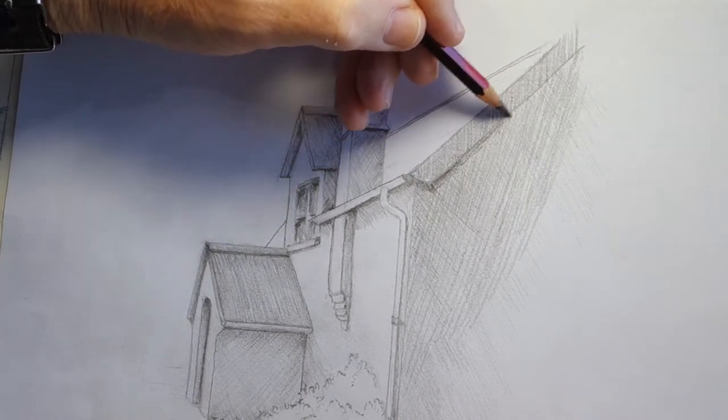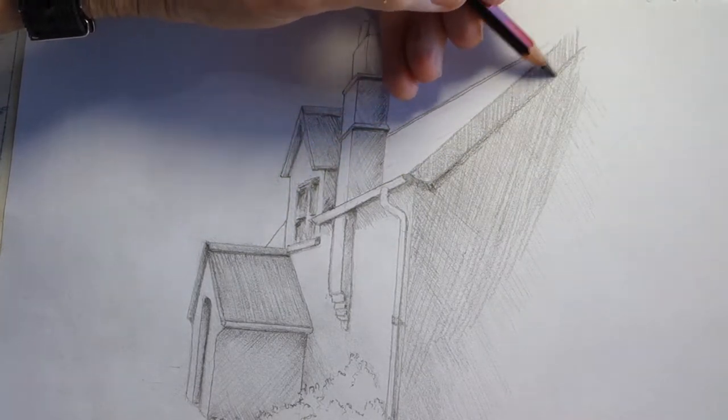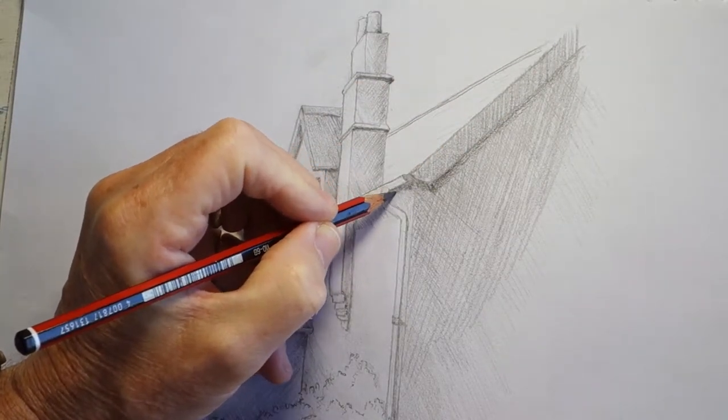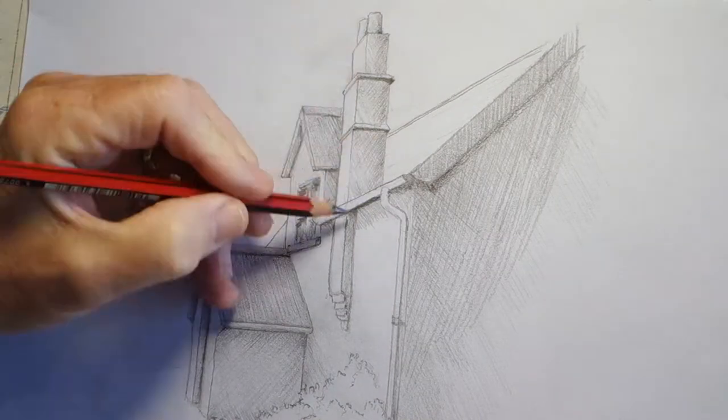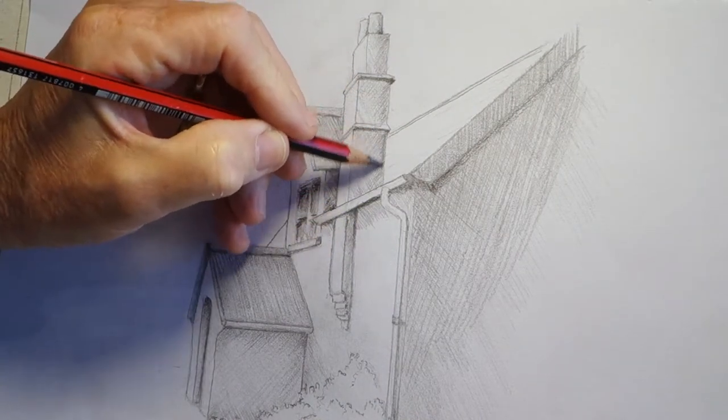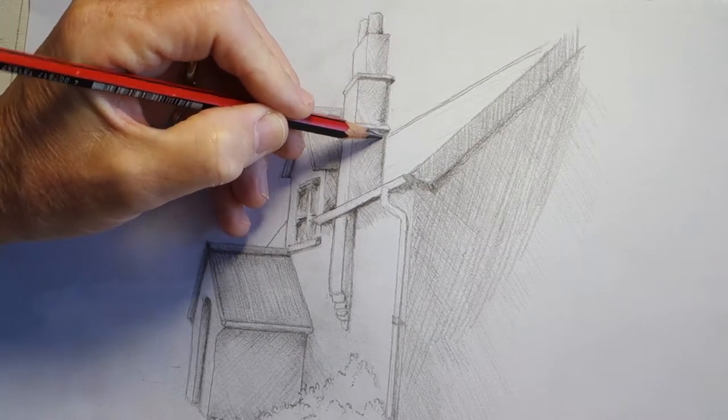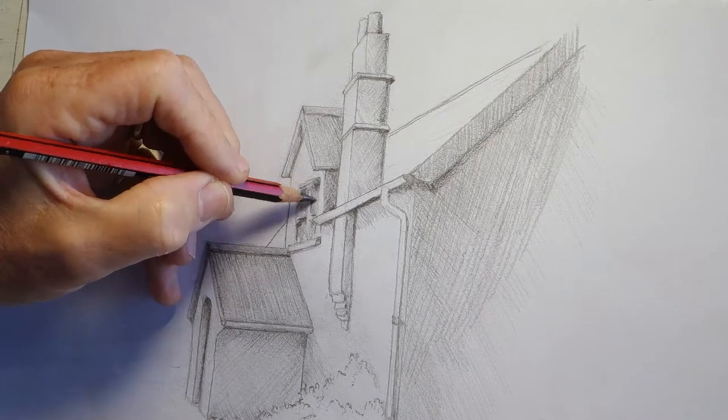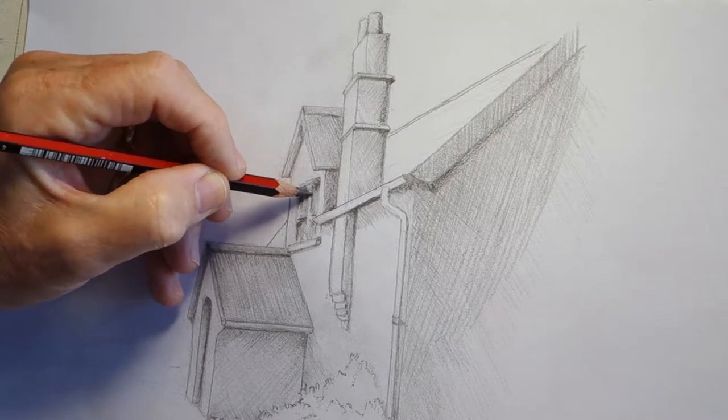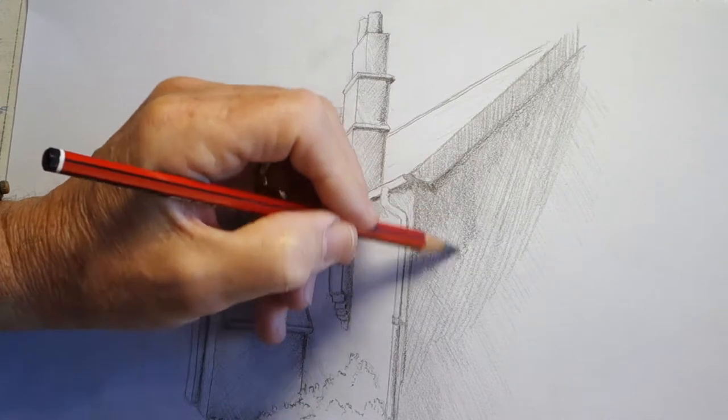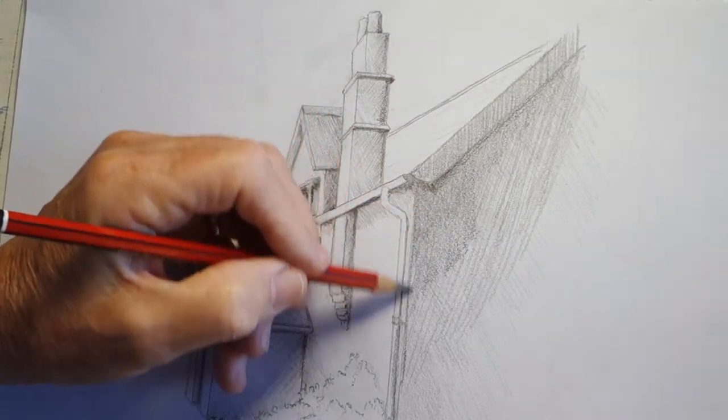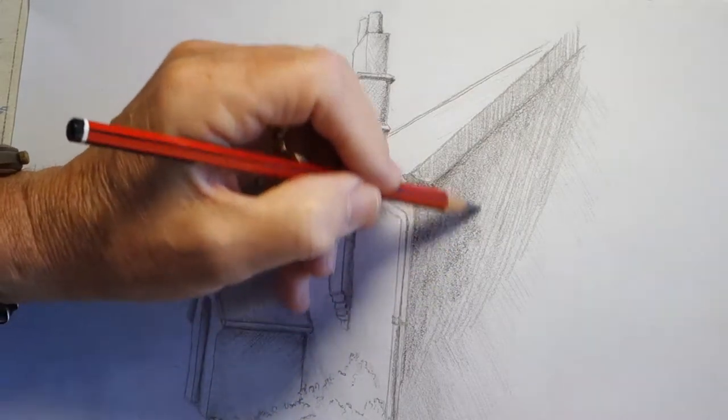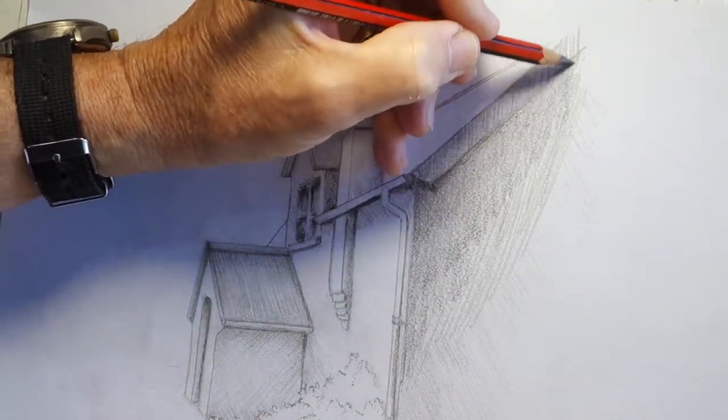Using a softer pencil you can go over your hatching and intensify all the shadows. One by one intensify them until you get the look that you're after. The more you intensify them the more drama you can get. By going over them you'll get a smoothness to the shading. Overlap your strokes to produce a seamless graduation.